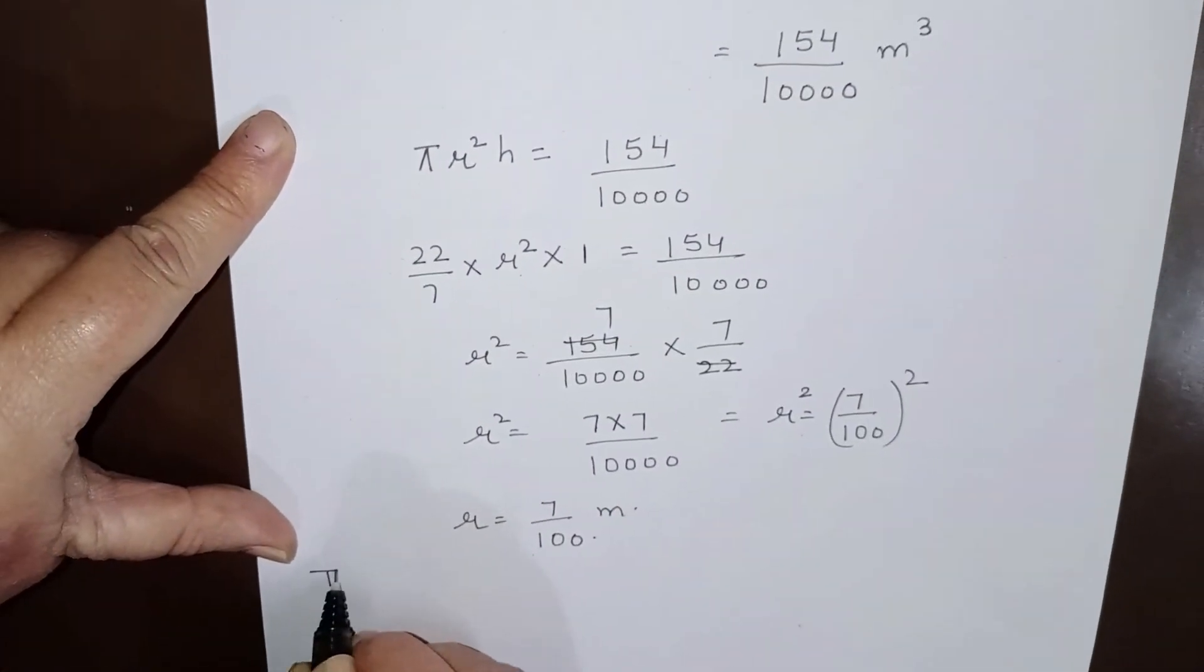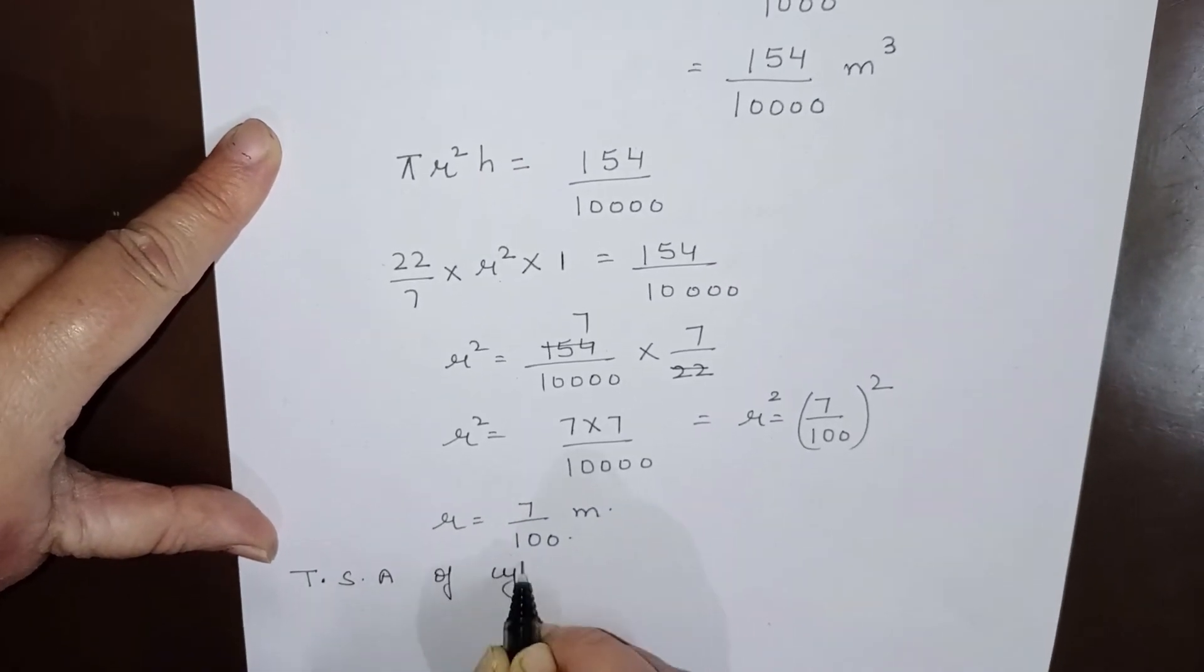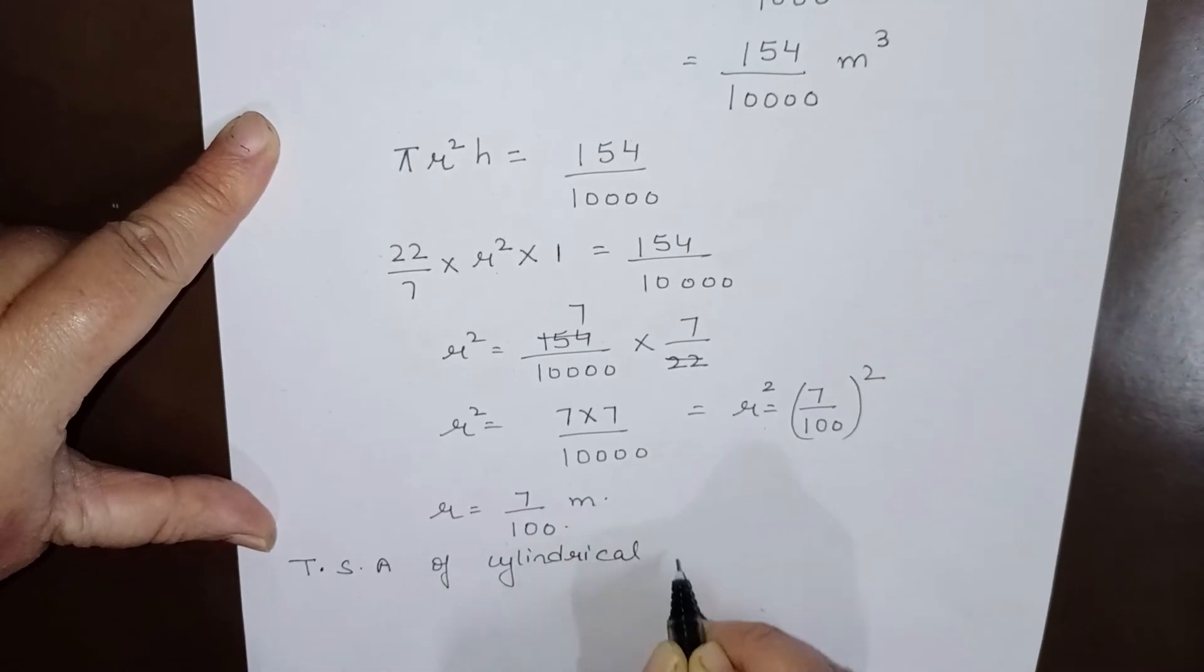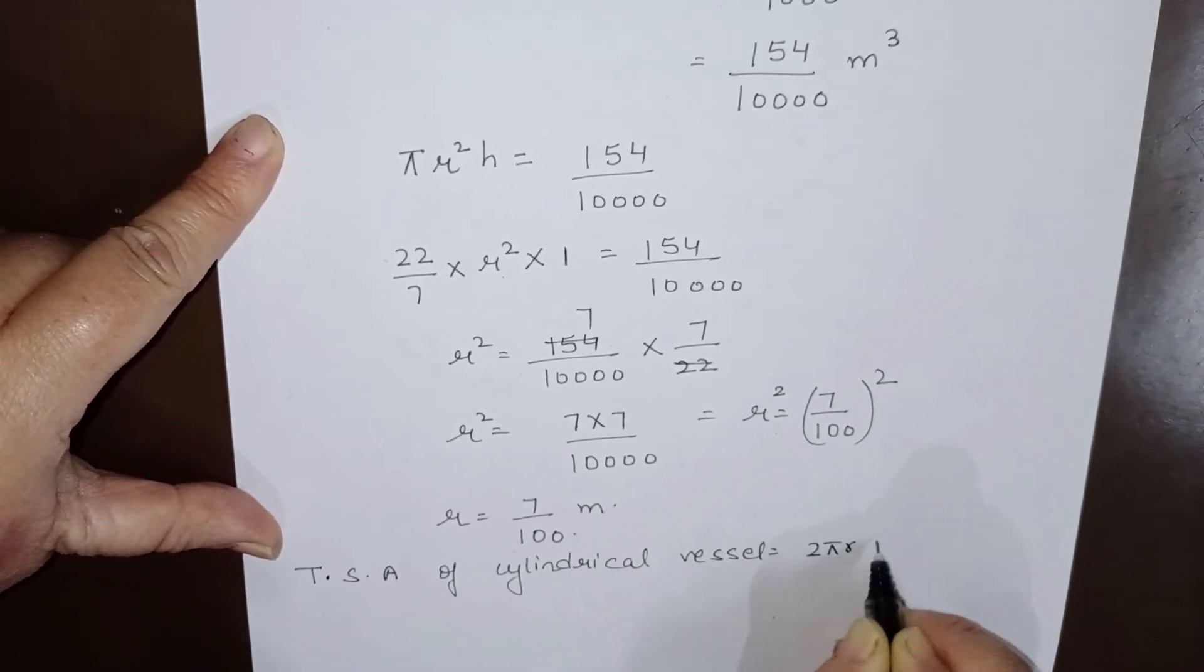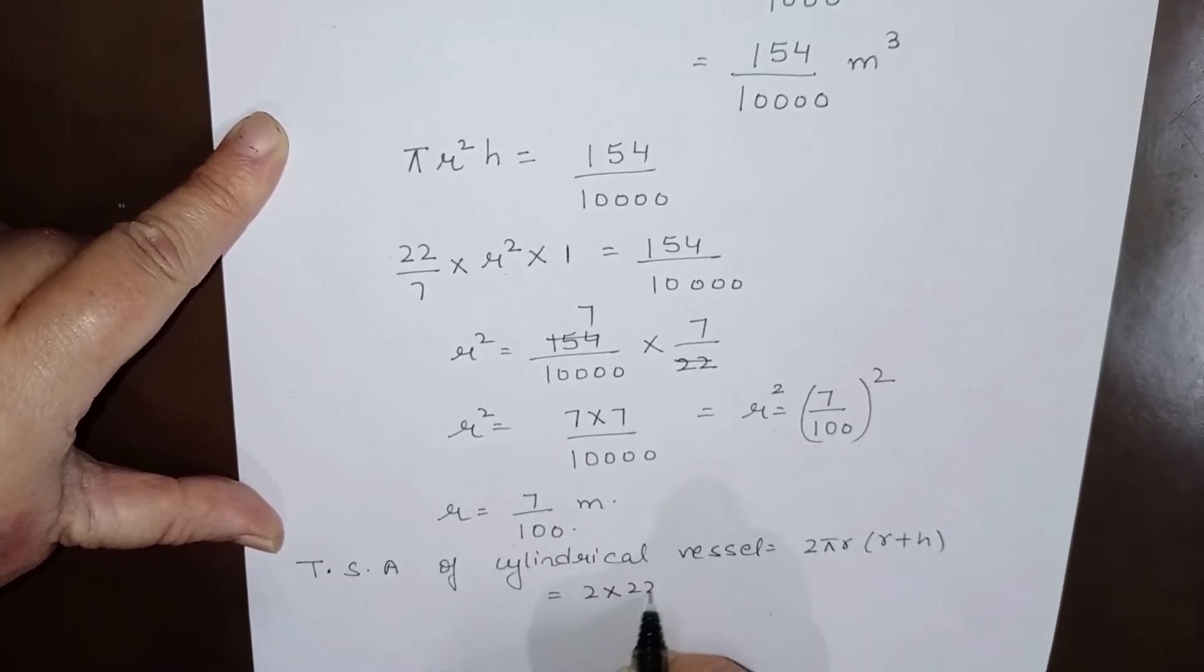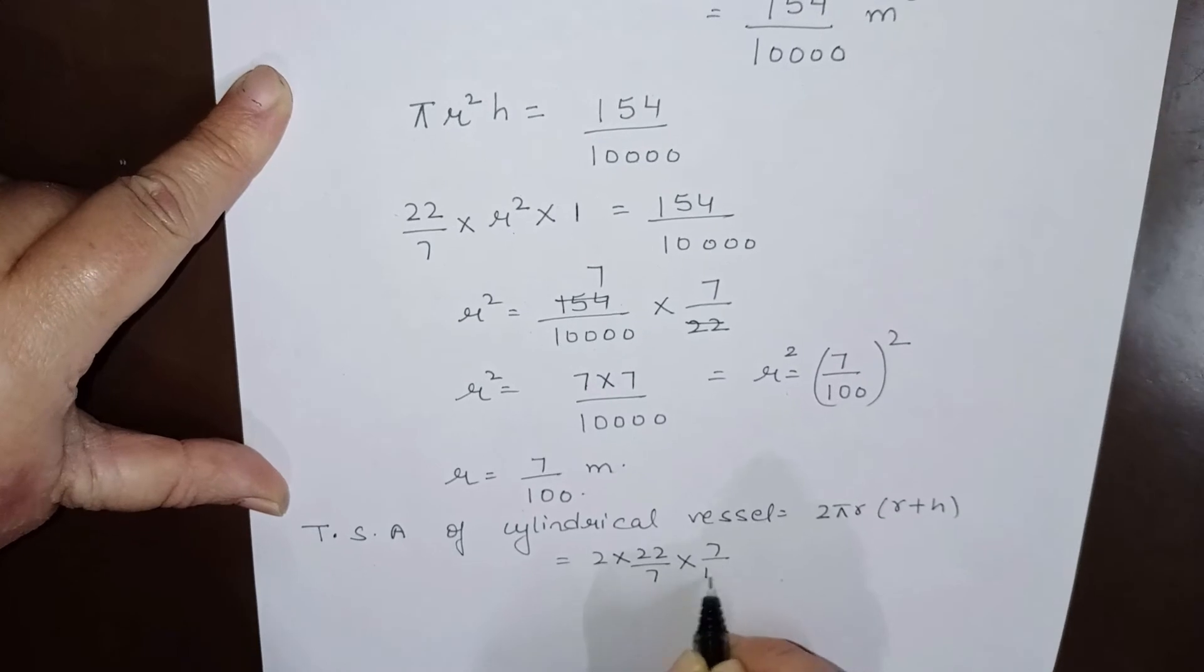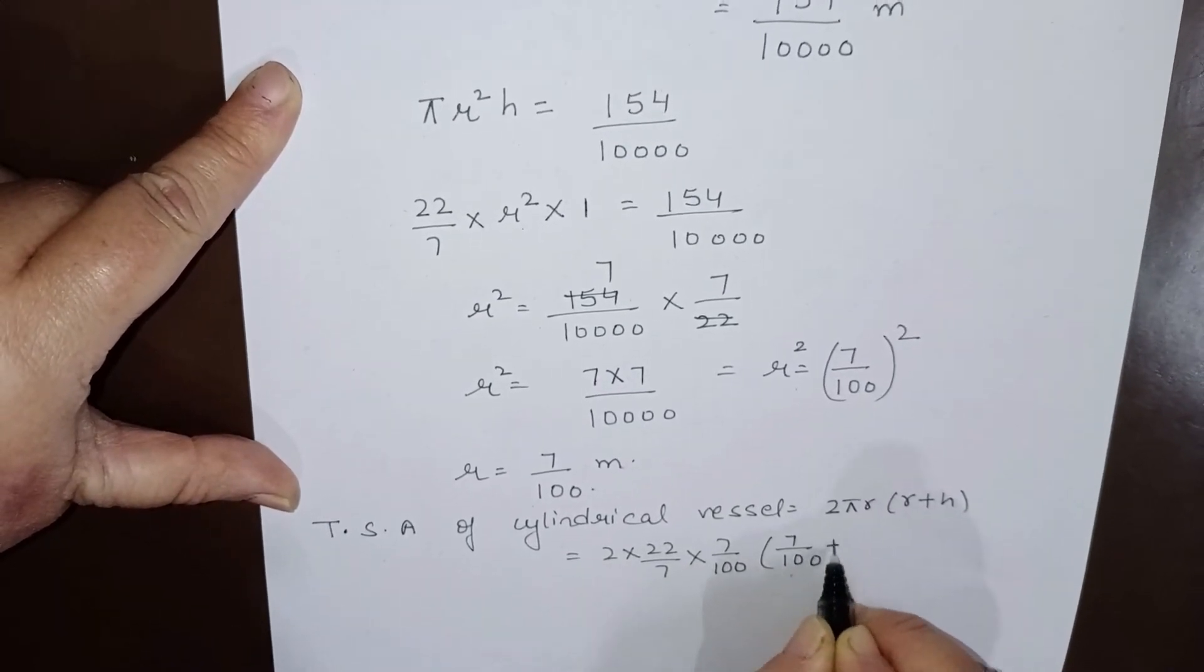Total surface area of a cylindrical vessel is given by 2πr(r+h). This equals 2 times 22/7 times 7/100, which is 7/100 plus 1.